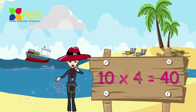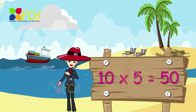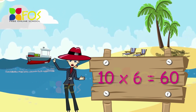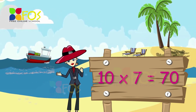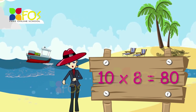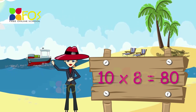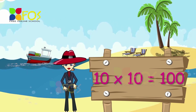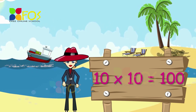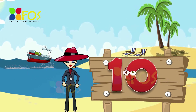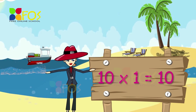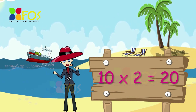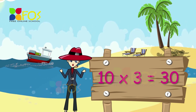Ten fours are forty. Ten fives are fifty. Ten sixes are sixty. Ten sevens are seventy. Ten eights are eighty. Ten nines are ninety. Ten tens are hundred. Ten ones are ten. Ten twos are twenty. Ten threes are thirty.